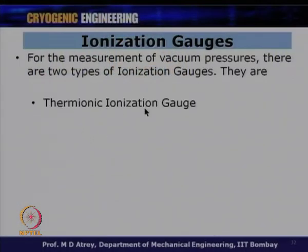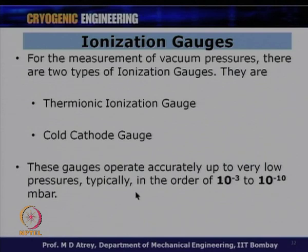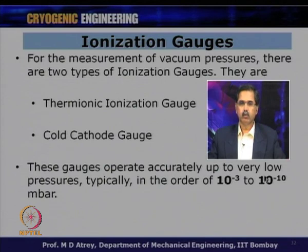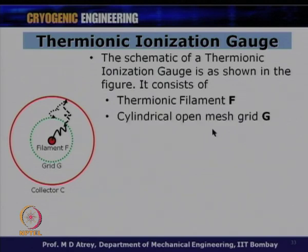There are two types of ionization gauges: thermionic ionization gauge and cold cathode gauge. Both differ in how electrons are produced. These gauges operate accurately in the range of 10⁻³ to 10⁻¹⁰ millibar. The thermionic ionization gauge schematic consists of a thermionic filament F, a cylindrical open-mesh grid G, and an ion collector C. The filament is charged at +30 V and the grid at +180 V, while the collector is earthed at zero potential.